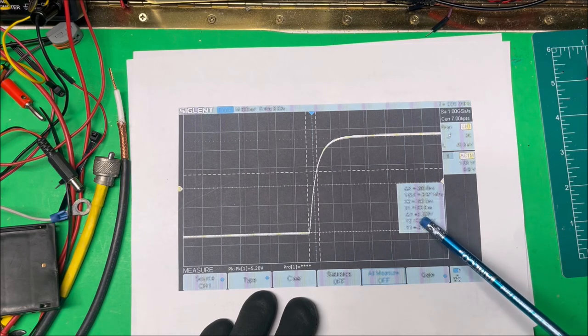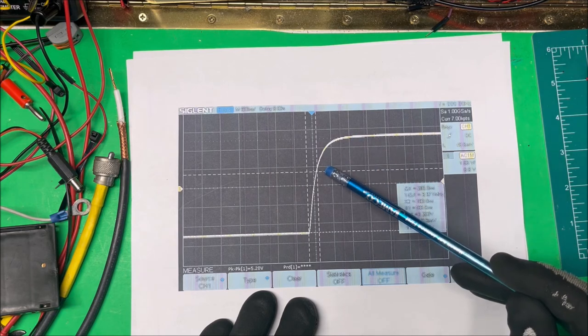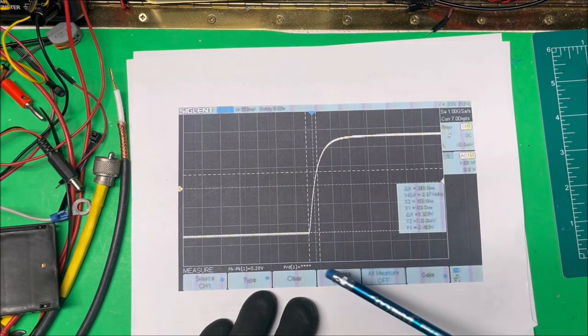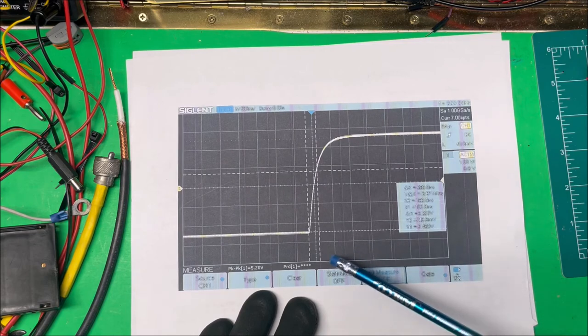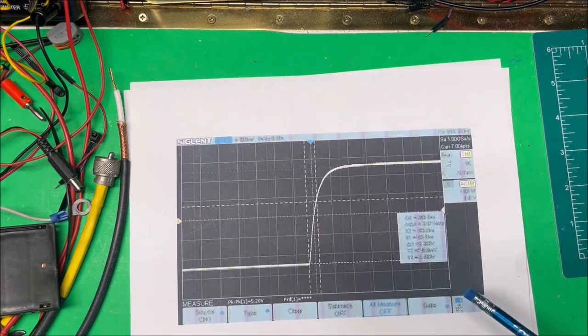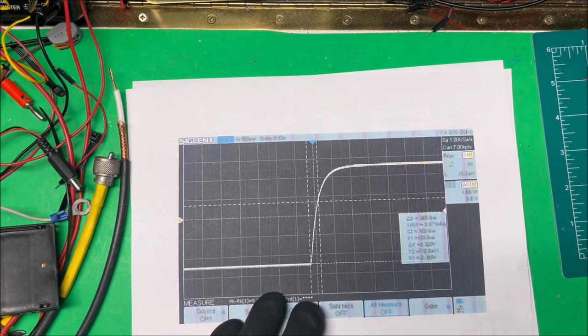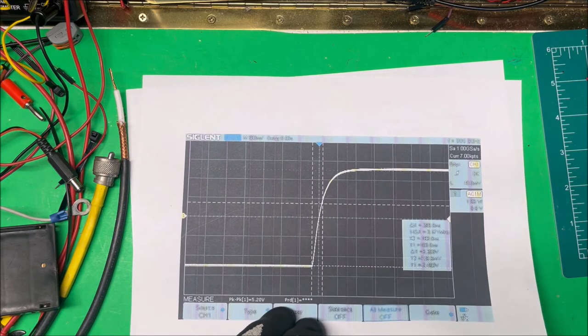And this is 3.2 volts up to this point right here, this one here, and this is 100 nanoseconds right here. So I just have to divide those out, and I come up with my 100 picofarads.